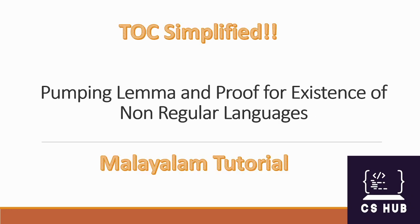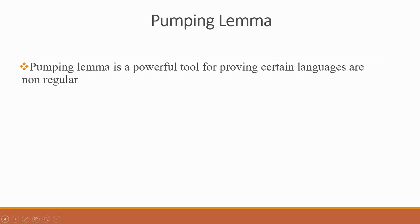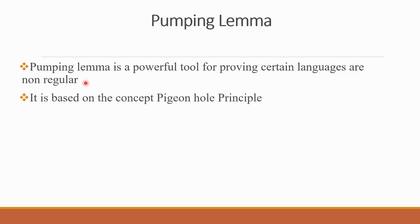Welcome to another video of computer science survey. Our subject is Theory of Computation, topic: Pumping Lemma and proof for existence of non-regular languages. We have discussed what a regular language is. To decide whether a language is regular or not, we use a theorem known as the Pumping Lemma. The Pumping Lemma is used to prove that a language is not a regular language. It is a powerful tool for proving certain languages are non-regular.